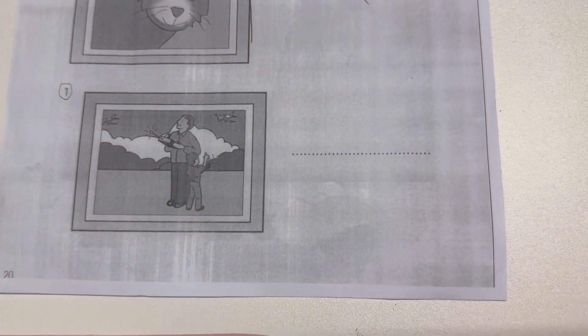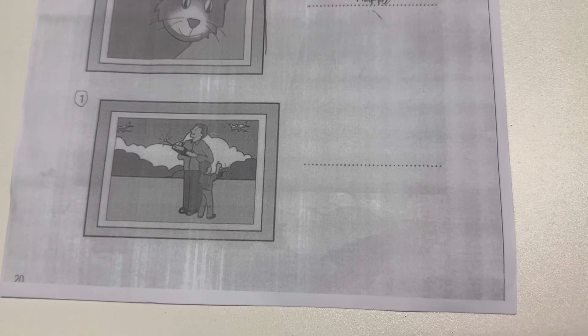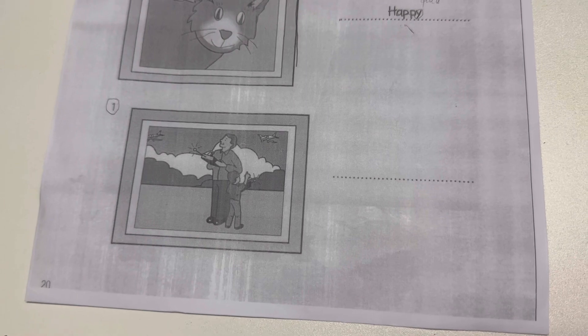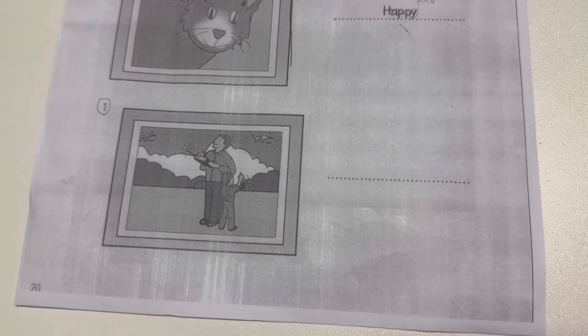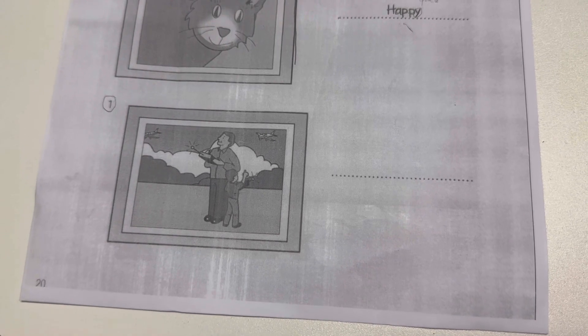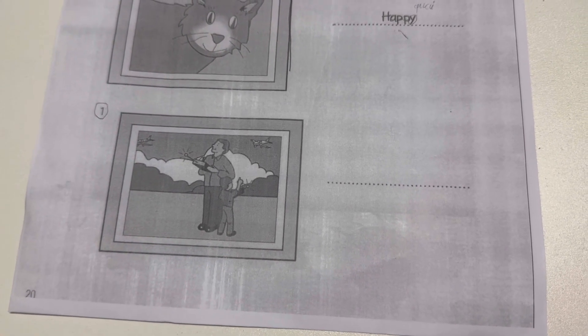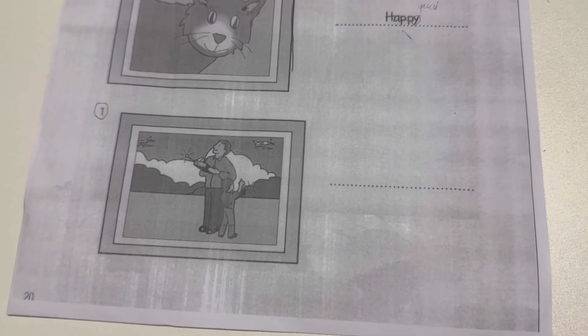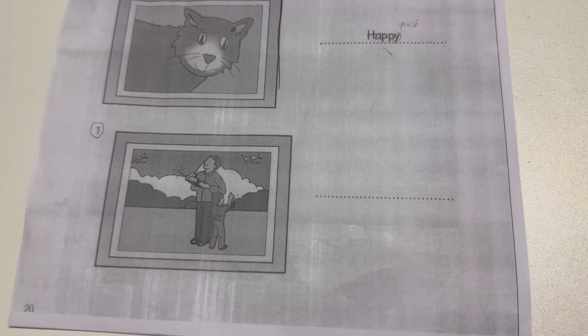Can you see the answers? Now you listen and write a name or a number. One. This is me and my dad. We're playing with some toy planes. How many planes have you got? Seven. Seven? Wow. There are seven toys.